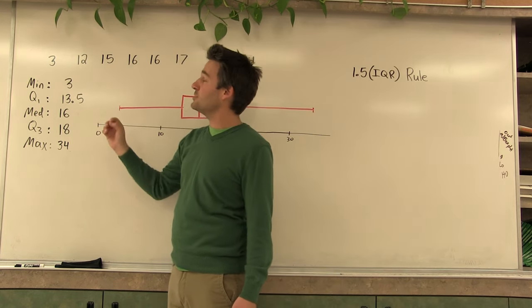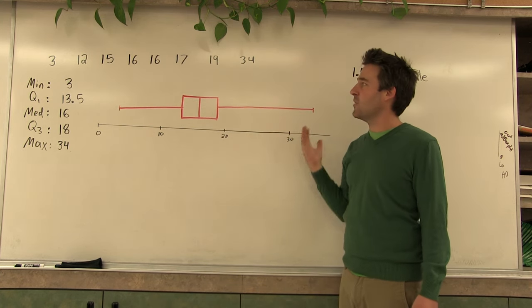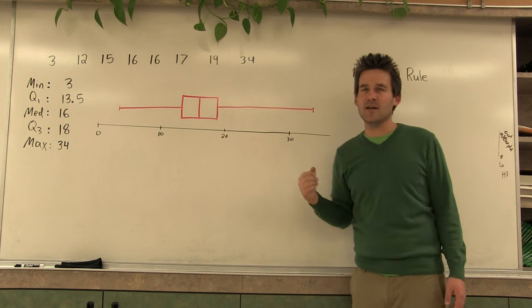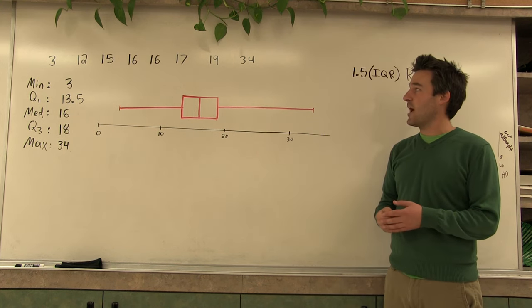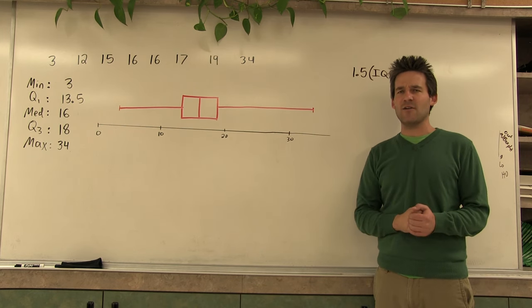This 3 might be a little too low when compared to the rest of the data, or this 34 might be a little too high when compared to the rest of the data. So what we're going to do is figure out if the 3 or the 34 or any of the other numbers actually qualify as outliers.